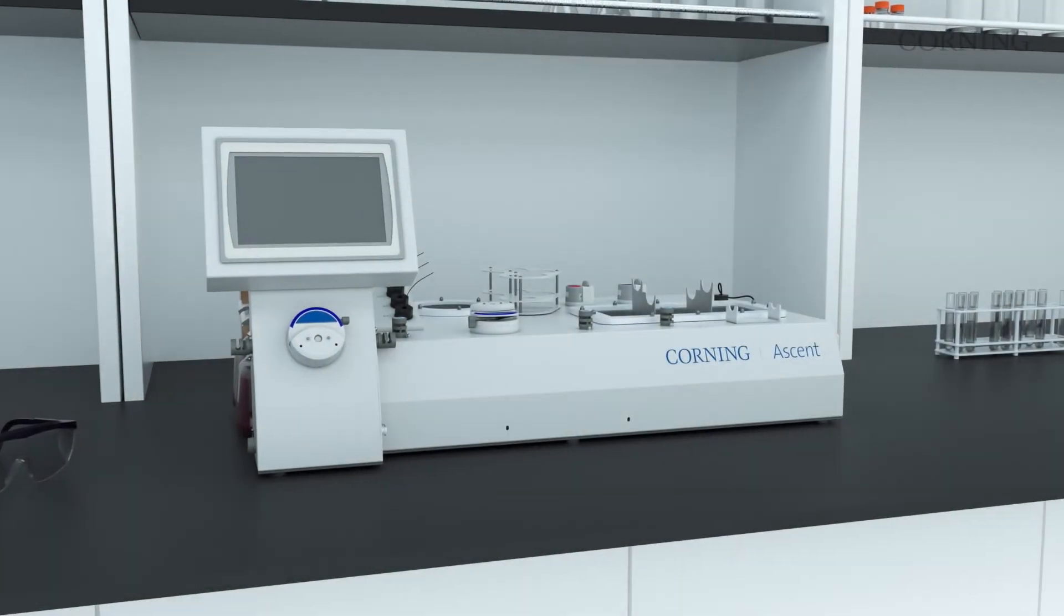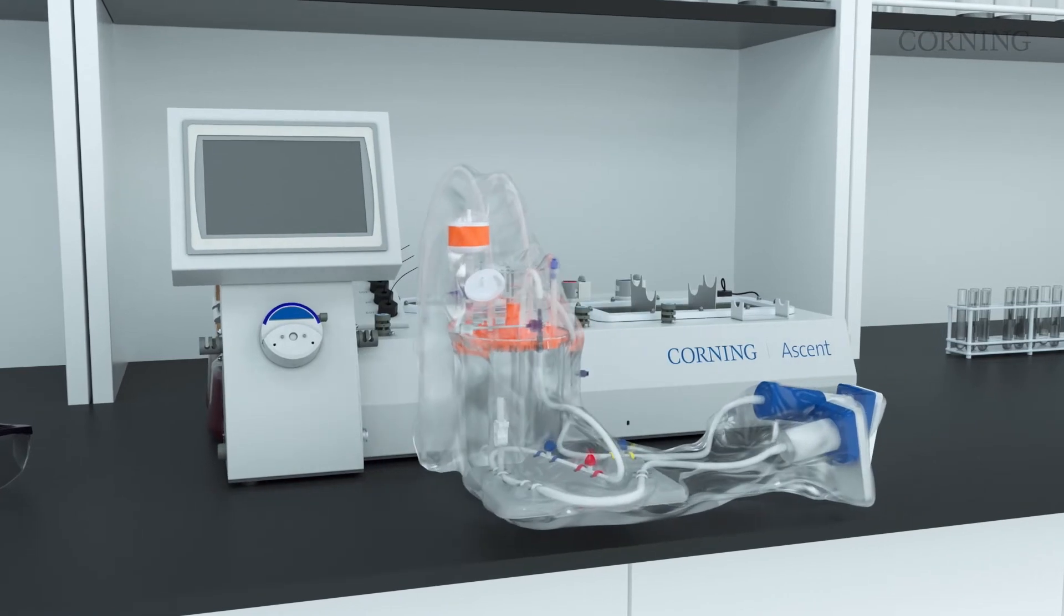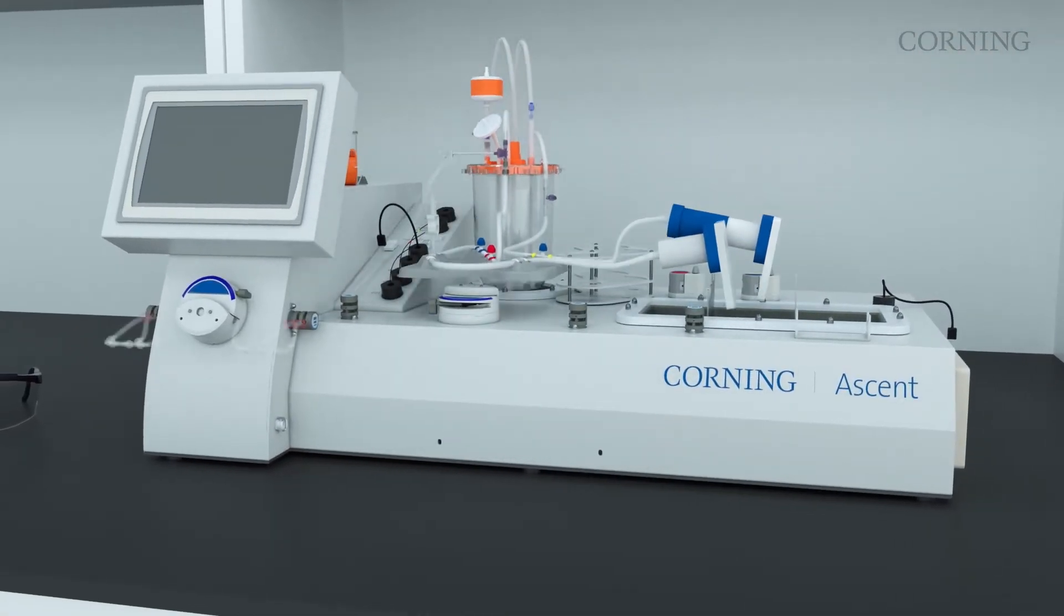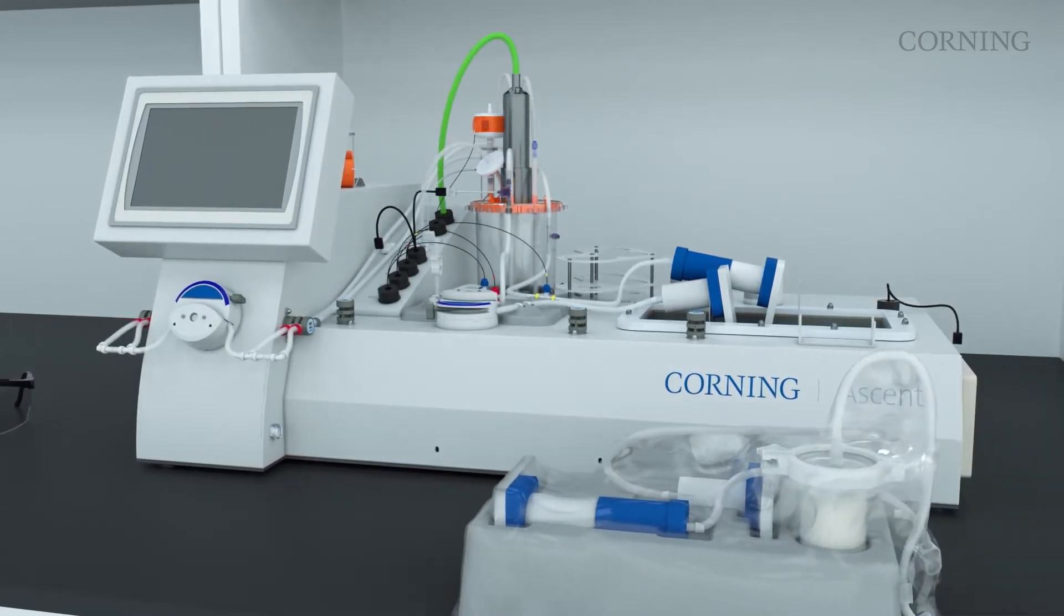The Ascend FBR system sets up quickly, consumables are irradiated, pre-assembled with closed system tubing and ready to use. No autoclaving is necessary.